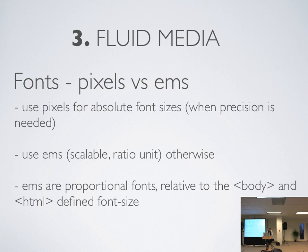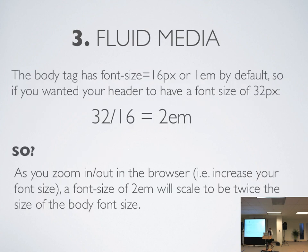The second part of fluid media is fonts — pixels versus ems. If you absolutely need your font size to be 16 pixels everywhere, like your company's logo requires a 16 pixel header, then just use pixels. Otherwise, use ems. They're a scalable ratio unit relative to the body and HTML tags. The body tag always has a default size of 16 pixels or 1em by default. So if you wanted your H2 to have a font size of 32 pixels, it's target font size — 32 pixels — divided by context — 16 pixels — which gives us 2em. It'll scale up to be twice the size of the body font size.